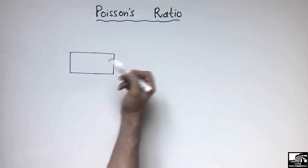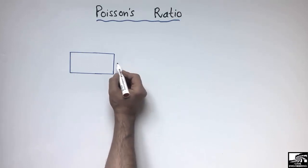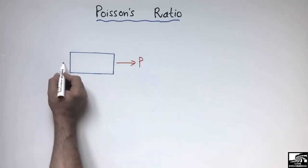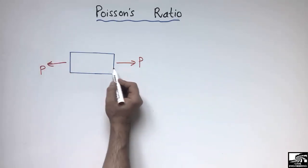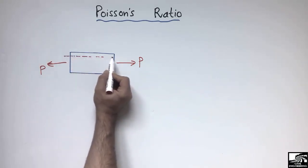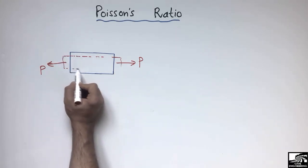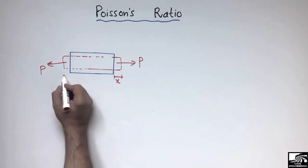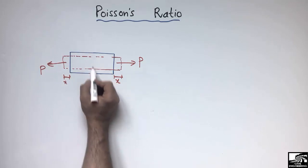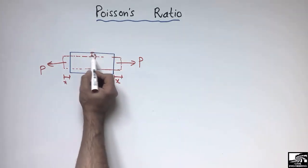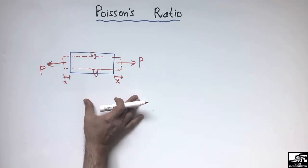To explain in more detail, consider this object — this material is being subjected to a tensile load P. Upon tensile load, this material will try to expand in the longitudinal direction, represented by x on both sides. At the same time, it is contracted in the lateral direction, represented by y. So that dimension is squeezed in the y direction while it is being expanded in the x direction.